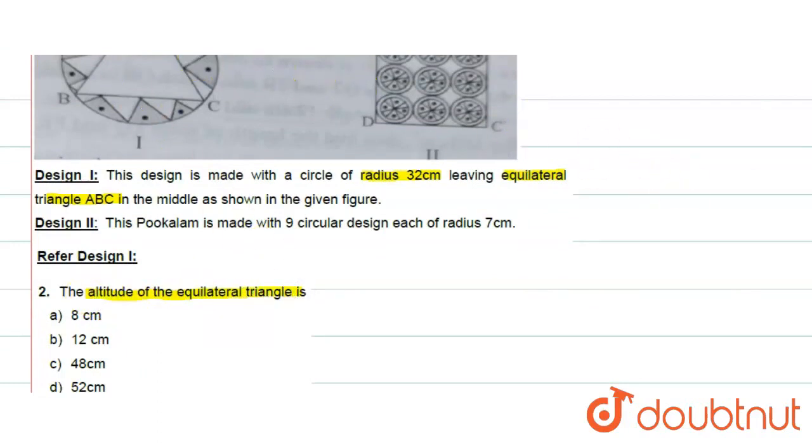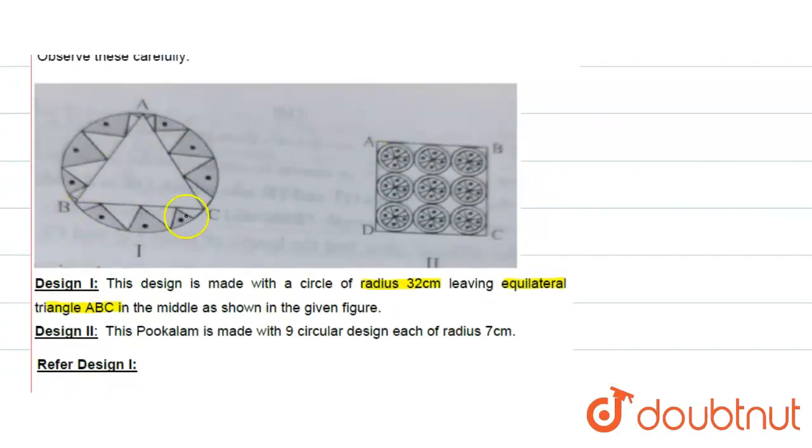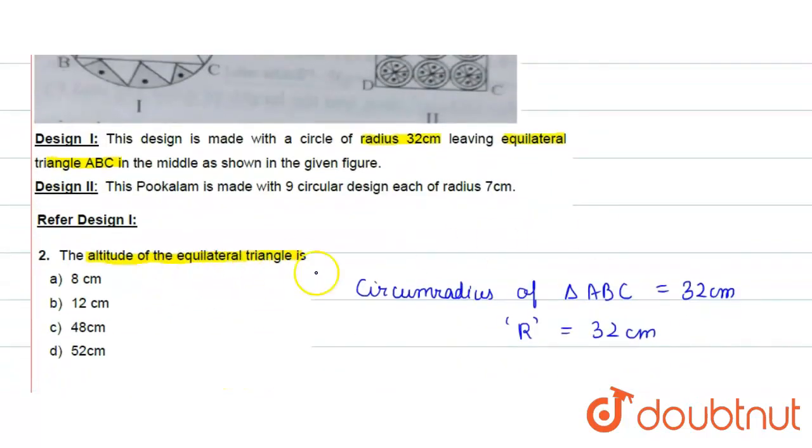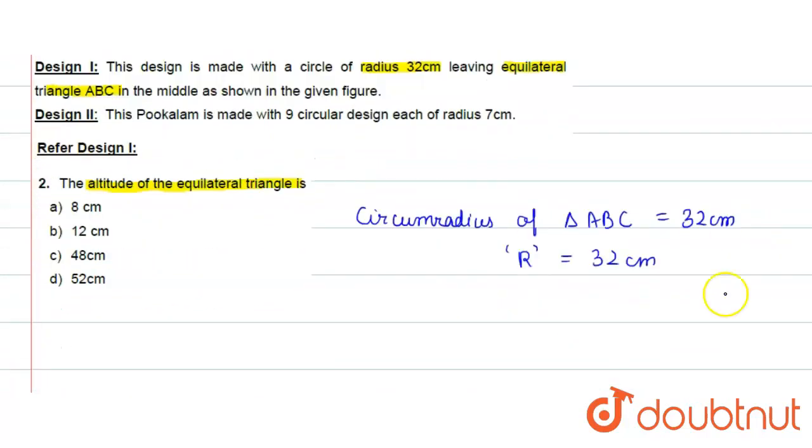So, here basically, equilateral triangle in design 1, ABC, circumradius of triangle ABC is equal to 32 cm, which we denote capital R, which we have given value 32 cm in the given question. We are asked the altitude of an equilateral triangle, so we know that the circumradius of an equilateral triangle, which is equal to the side of an equilateral triangle upon root 3.